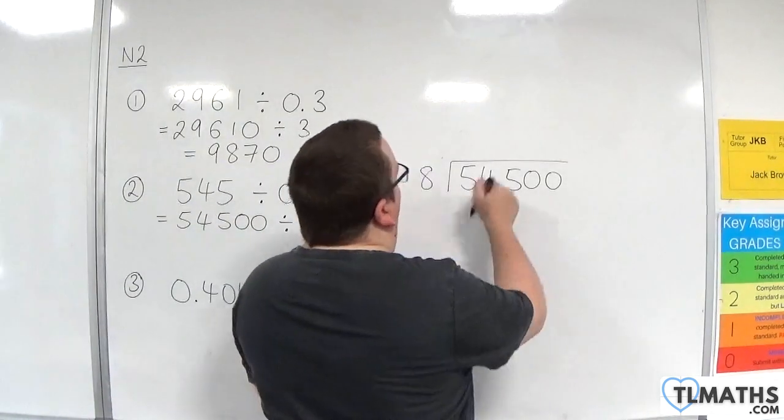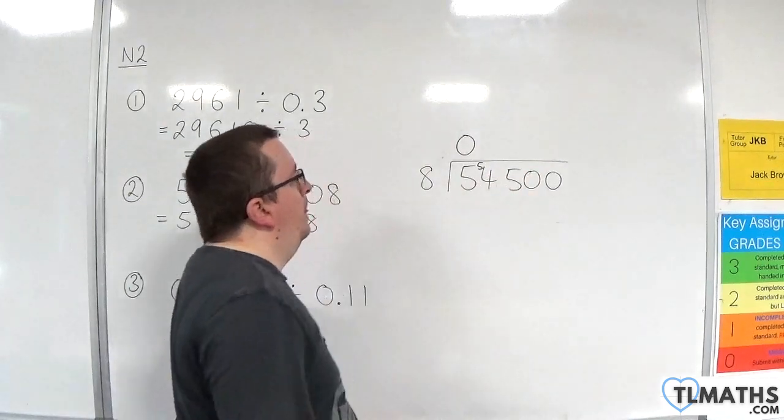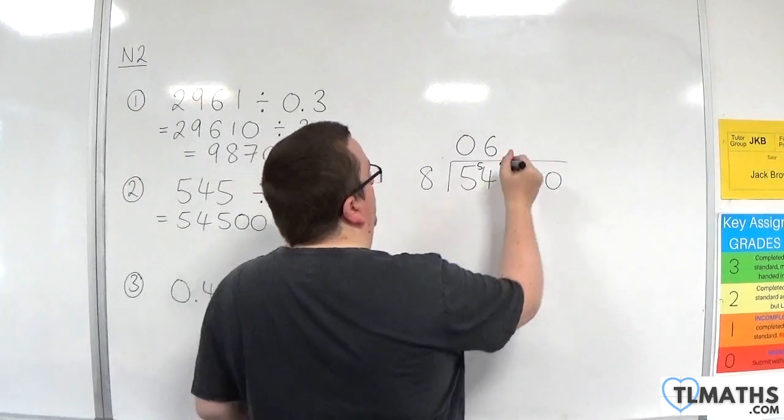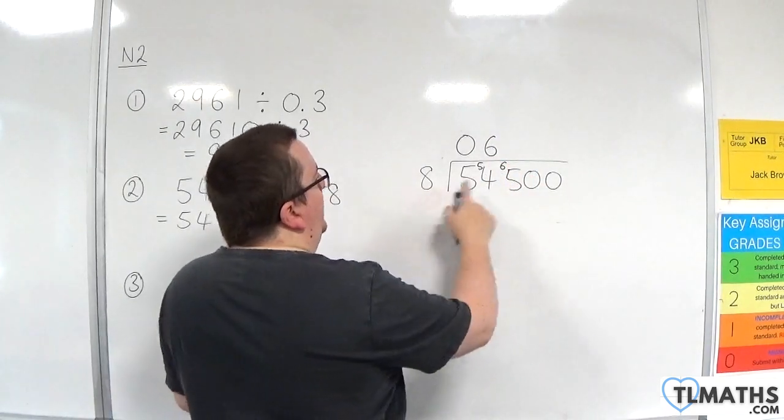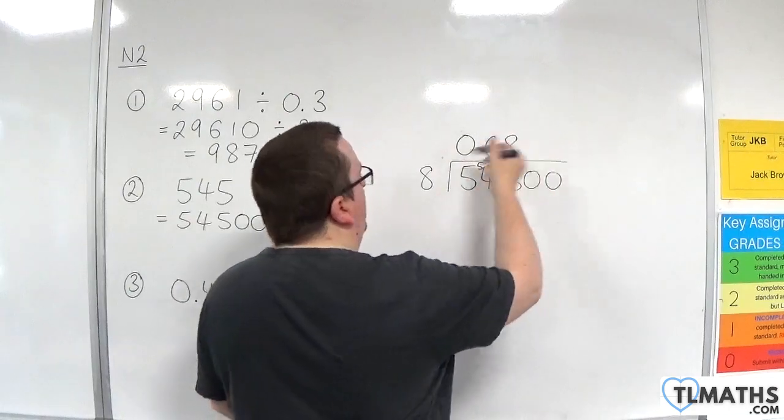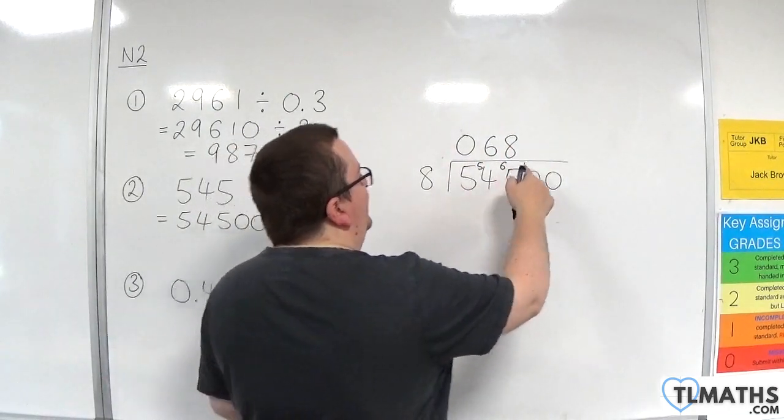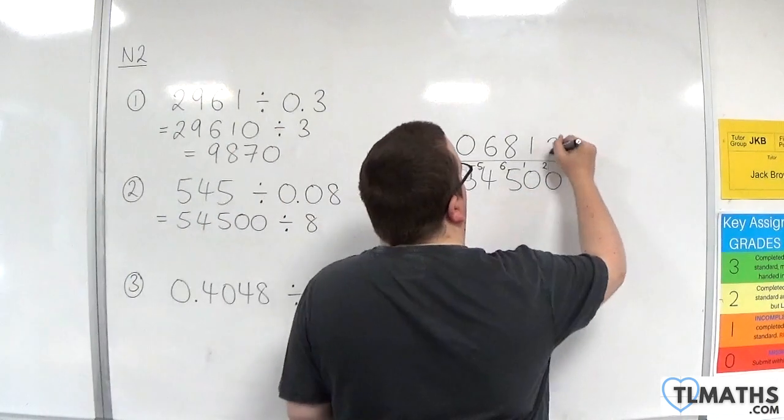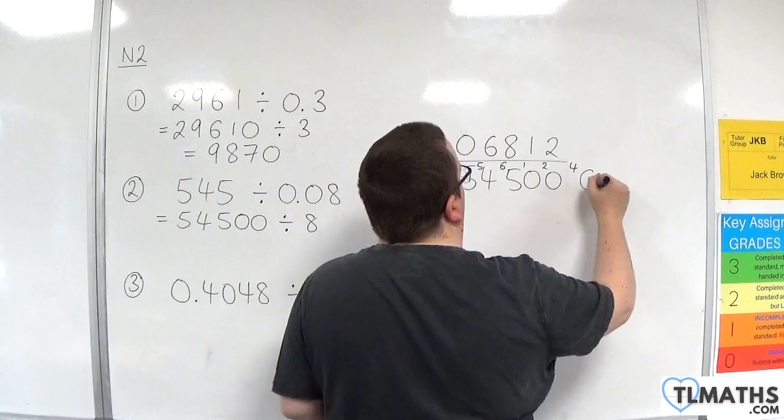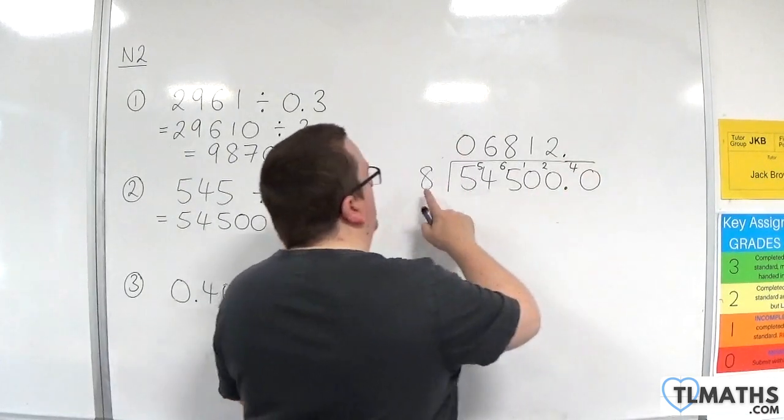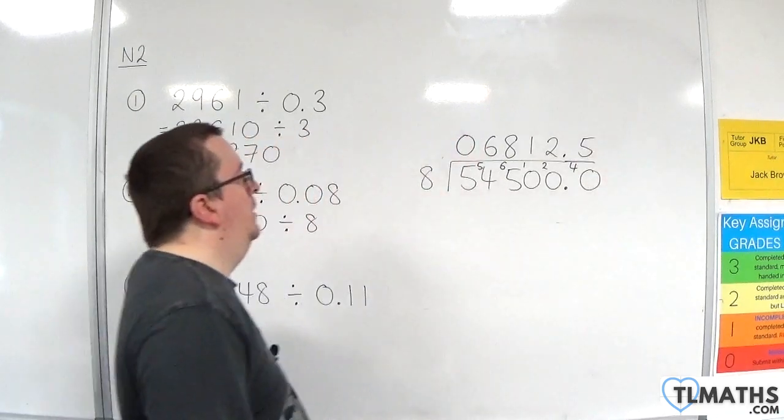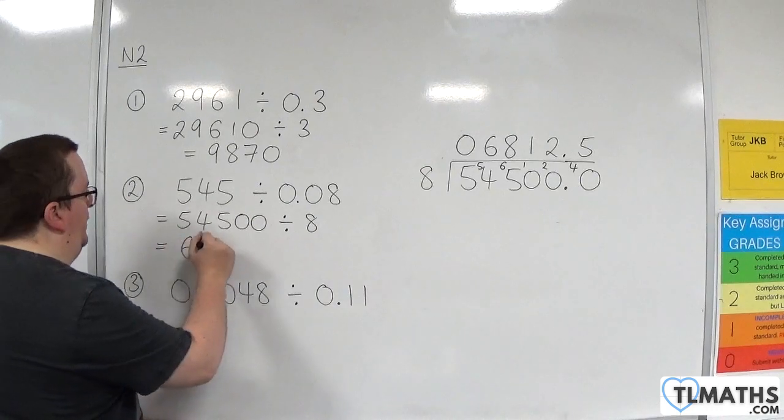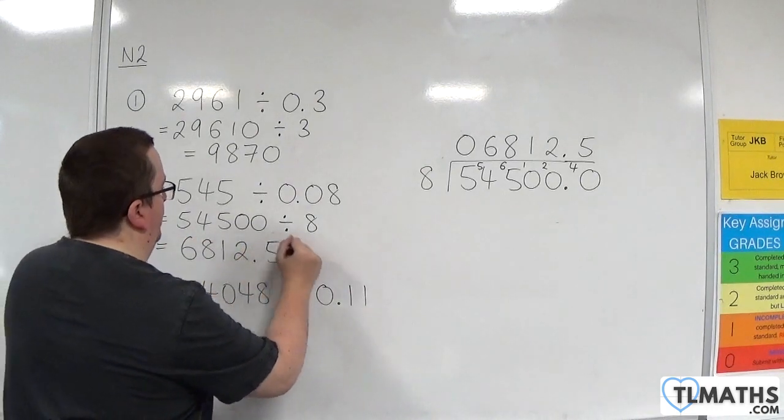8 into 5 goes 0 with 5 left over. 8 into 54 goes 6, 6 eights are 48 with 6 left over. 8 into 65 goes 8, 8 eights are 64 with 1 left over. 8 into 10 goes 1 with 2 left over. 8 into 20 goes 2 with 4 left over. I need to bring in 0 and a decimal point. 8 into 40 goes 5. So 545 divided by 0.08 is 6,812.5.